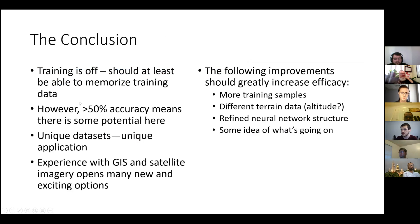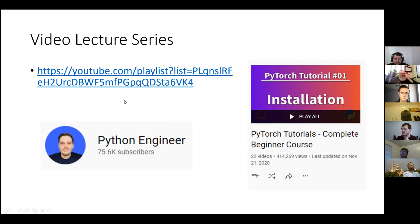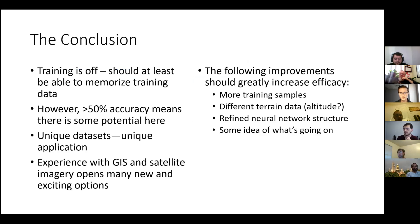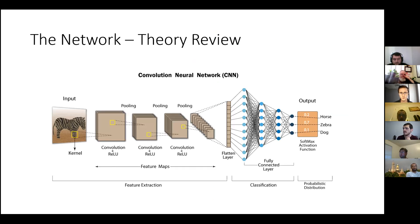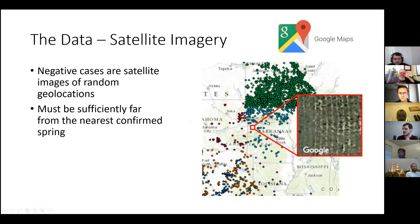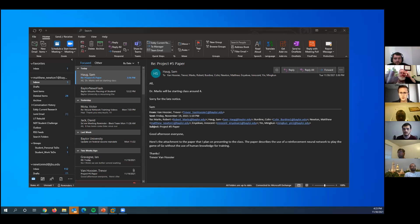For the negative cases, the random latitude and longitude points were bounded to Arkansas — a bounding box was drawn around the state and random coordinates were generated within that range.